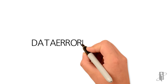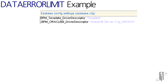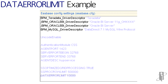Here is an example of where the Data Error Limit is used in an S-Base config file. We set the limit here at 10,000 rows. So, when S-Base encounters the 10,000th row of a data load or dimension build, it will stop the operation and issue an error message telling you that the operation was not successful.